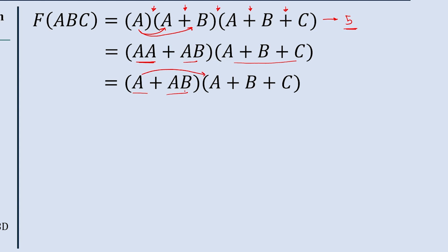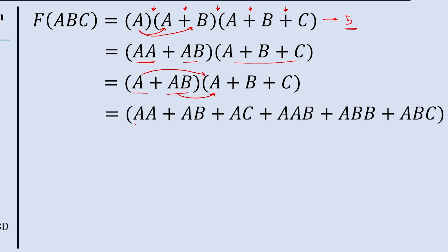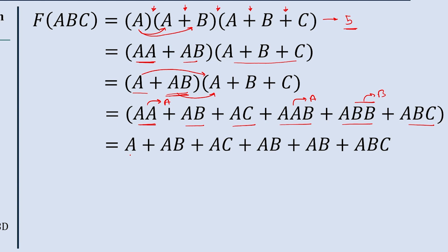We multiply A with (A+B+C), giving us A·A, A·B, A·C, and then multiply AB with all three terms giving AAB, ABB, and ABC. Now A·A simplifies to A, and B·B simplifies to B. So the further simplified equation is: A + AB + AC + AB + AB + ABC.